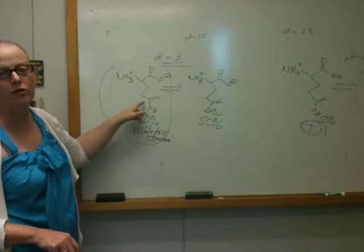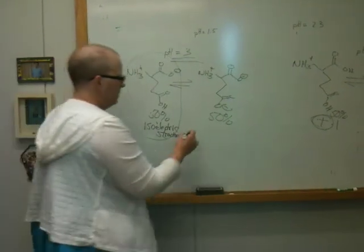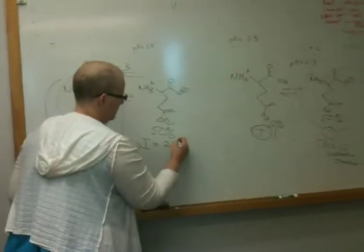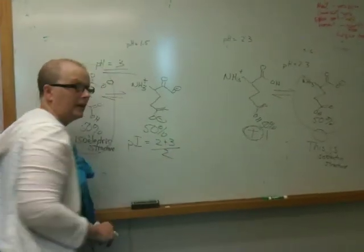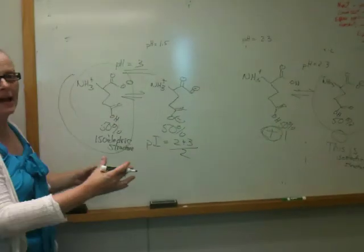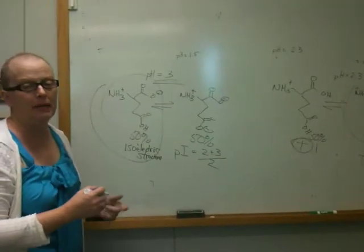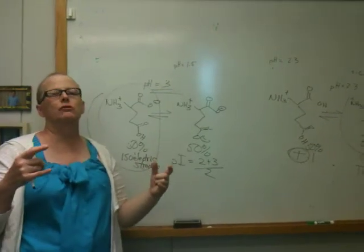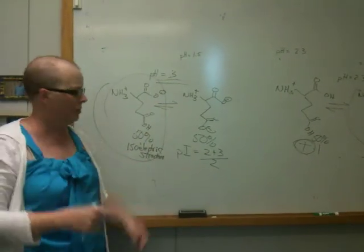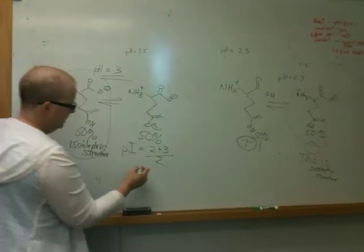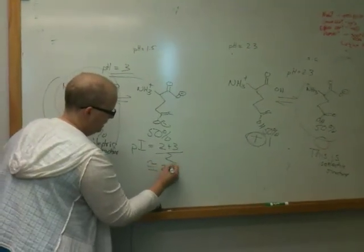If that's going to be your dominant structure, you have to be at the pI. So the pI here is going to equal 2.3 plus 3 divided by 2. It's going to be the average of the values that surround the isoelectric structure. The pHs that surround the isoelectric structure. So where the isoelectric structure dominates is right in the middle of those two. So this is going to be roughly, this is just approximating at 2.5.